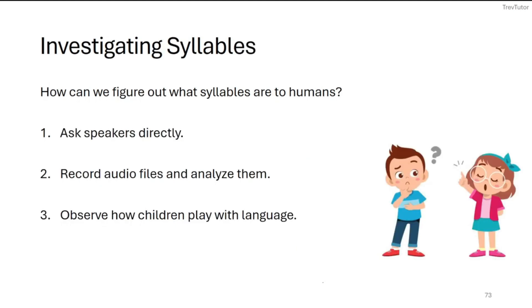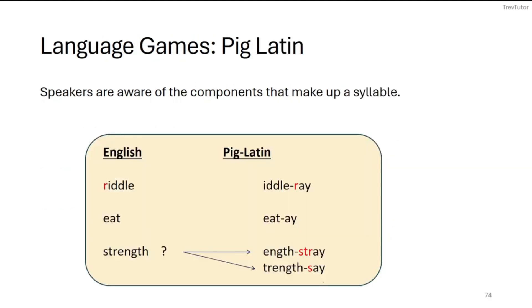Now, I just mentioned that kids can do this without any linguistic training, which tells us that syllables do exist. But we could figure out how syllables work in different ways — we could ask speakers how they feel about syllables, we could record audio files and look at how sounds are progressing to break things up into syllables, or we can investigate children and see how they play with syllables. Consider pig Latin — some of you who have grown up in English-speaking countries have probably played around with pig Latin a little bit, as with 'instrumental' and 'marketable.'